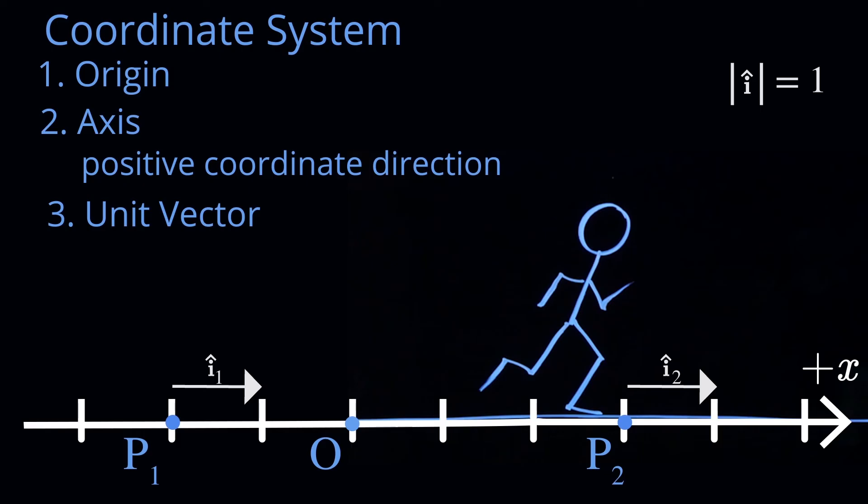And they're pointing in the same direction. So if two vectors have the same magnitude and point in the same direction, they're equal.